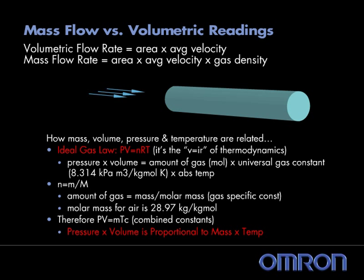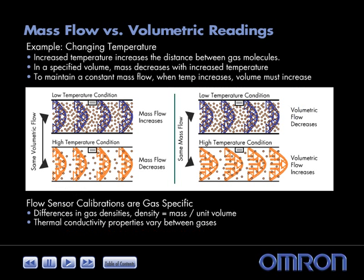Volumetric flow is a reading of the volume of gas moving over a specific time period. Mass flow describes how much gas and takes into account the density of the specific gas. The relationship between pressure, volume, mass, and temperature are explained by the ideal gas law.